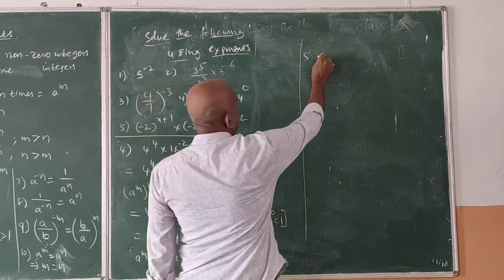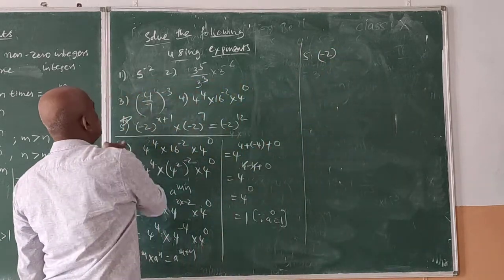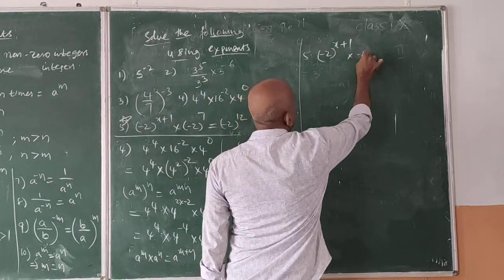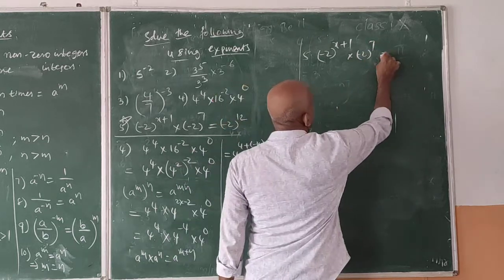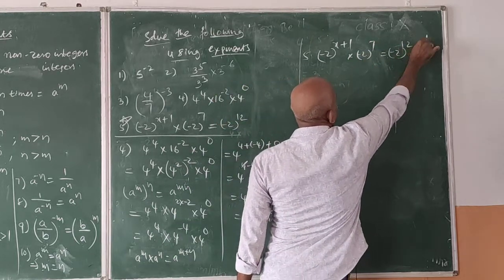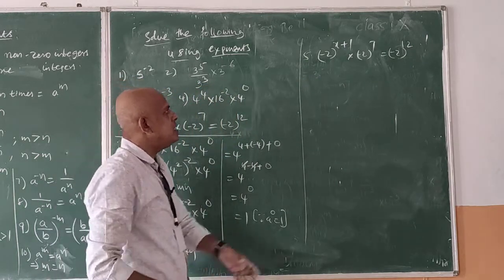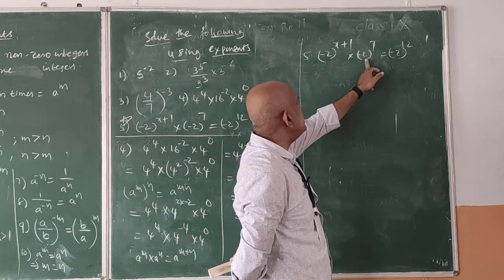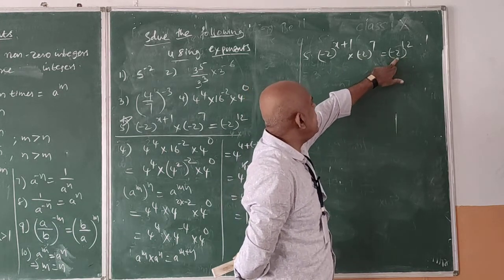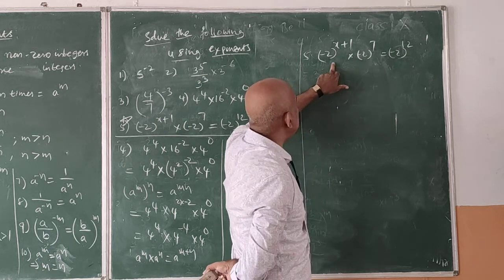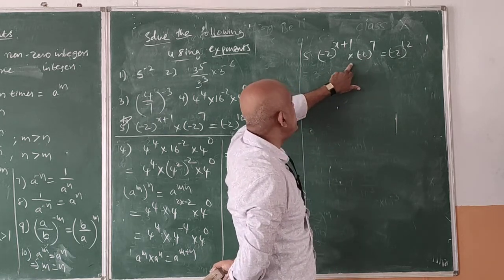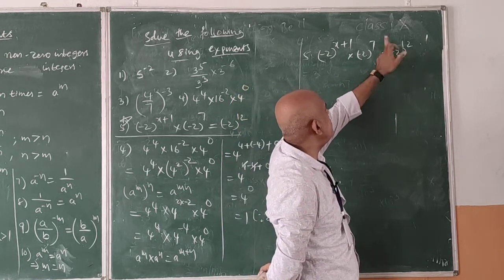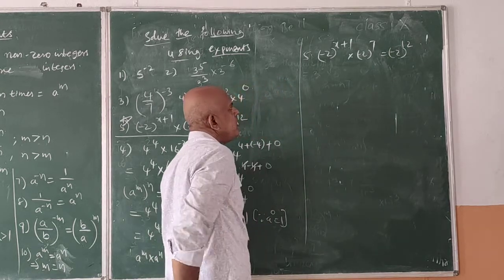Fifth problem: minus 2 to the power of x plus 1, multiplied by minus 2 to the power of 7, equals minus 2 to the power of 12. Here we have an equation. The left hand side base is minus 2 and the right hand side base is also minus 2. We have two terms on the left hand side, so we will combine them into one term, and then equate the powers with the right hand side.